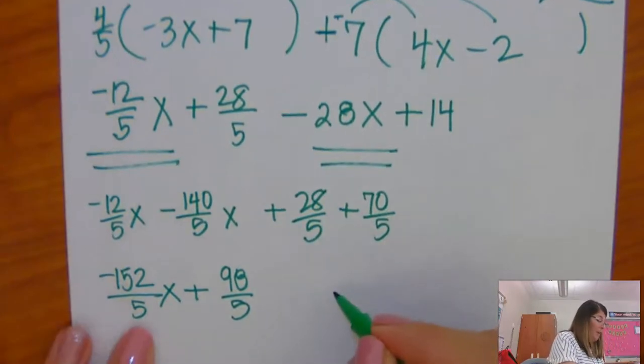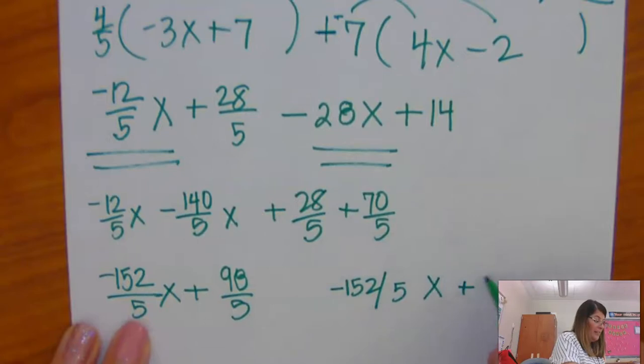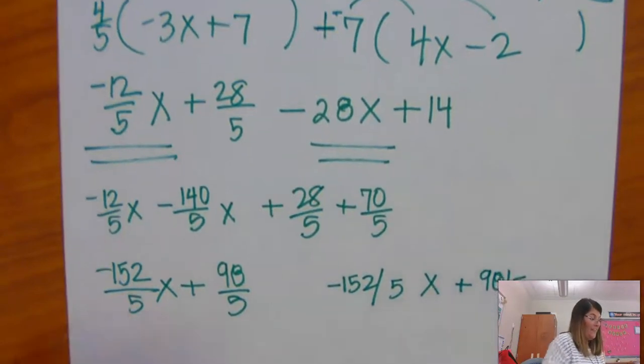So, remember in Buzz, you type your coefficient first, -152/5, then your x, plus 98/5. I hope this has helped you if you had troubles with number 6.